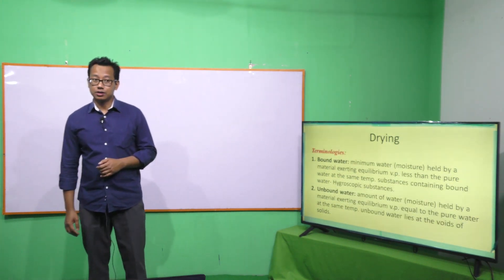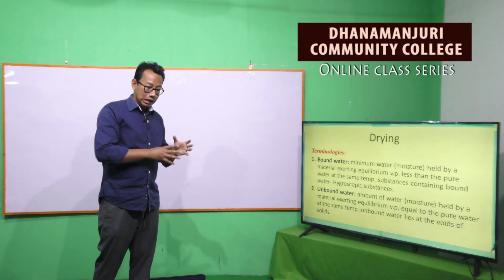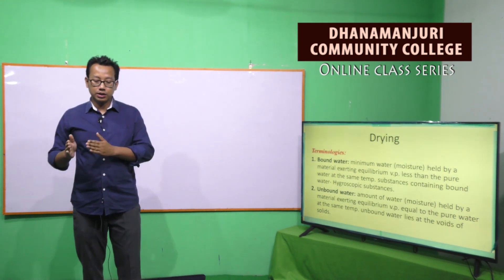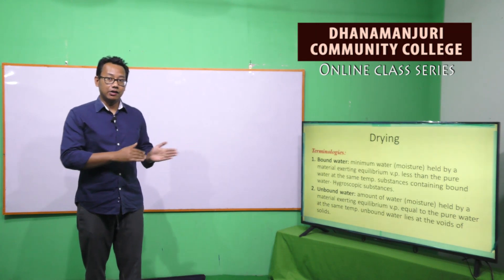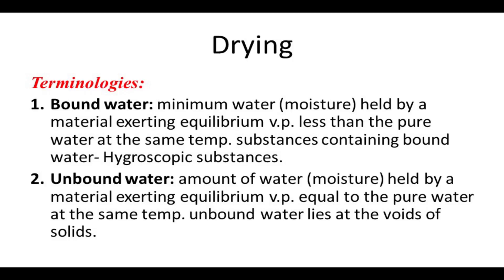There are some terminologies one has to understand before undergoing the process of drying. The first two terminologies, quite similar to each other, are bound and unbound water. Bound water is the minimum water held by a material exerting equilibrium vapor pressure less than that of pure water. Whereas unbound water is the amount of water that creates equal vapor pressure with that of pure water at the same temperature.